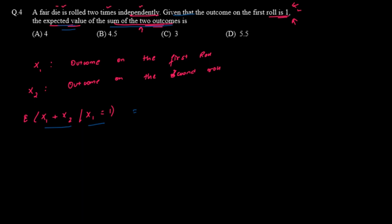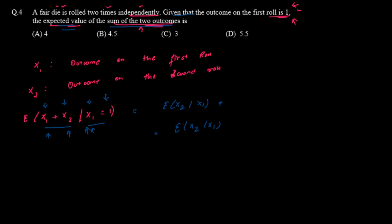We can break this into two parts: E[X1 | X1=1] plus E[X2 | X1=1]. Since X1 is given to equal 1, E[X1 | X1=1] is simply 1. So we have E[X2 | X1=1] plus 1.